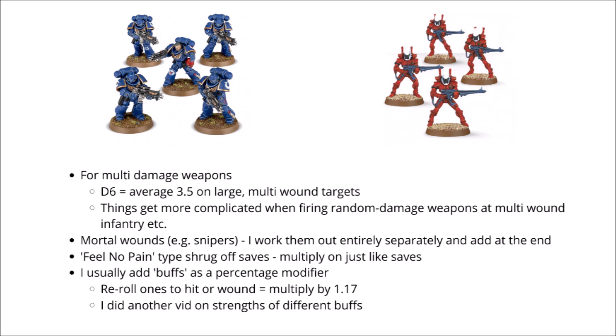If you have a mortal wound mechanic in the weapon, such as sniper rifles — which do a mortal wound in addition to normal damage when wounding on a 6 — I would typically calculate that mortal wound chance entirely separately and then add it on to your number at the end. So with 5 Space Marine sniper rifles, I could expect 3 and one-third hits, and then of those hits I'd expect just over 0.5 mortal wounds. I'd take that number and add it on to the rest of the sniper rifle's damage output after doing the previous calculation.